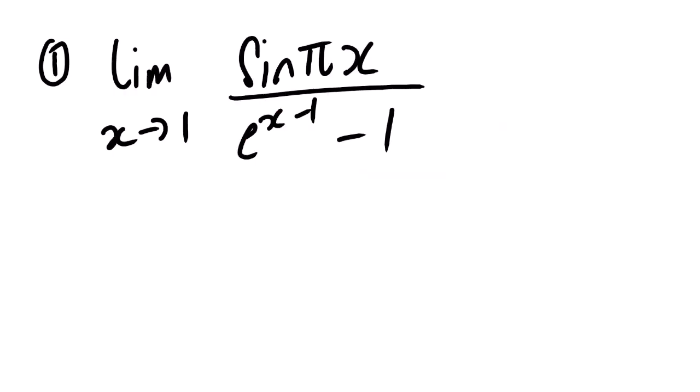Our first example: the limit as x approaches 1, where we have sin(πx) over e to the power (x minus 1) minus 1. If we substitute 1 where we see x, we are going to find a form like 0 over 0, which is indeterminate. In this case, substitution doesn't work — we need to apply L'Hôpital's rule.